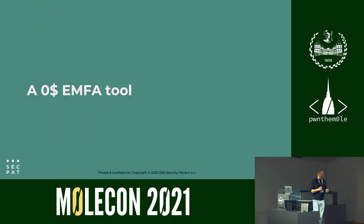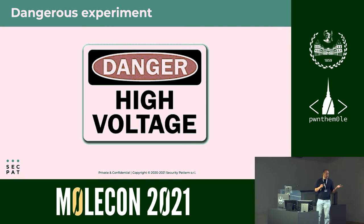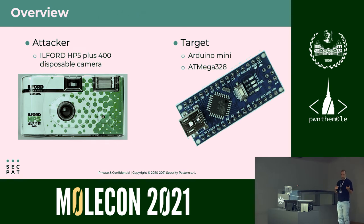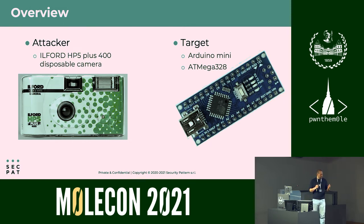The tool uses approximately 330 to 600 volts, so be aware — it's easy to get electroshocked, and proper insulation is necessary. The idea is to find the cheapest way to mount electromagnetic fault attacks. The target is an Arduino Mini embedding an ATmega328 microprocessor. The tool is based on the flash circuit of a disposable camera — specifically the Ilford HP5 Plus 400.